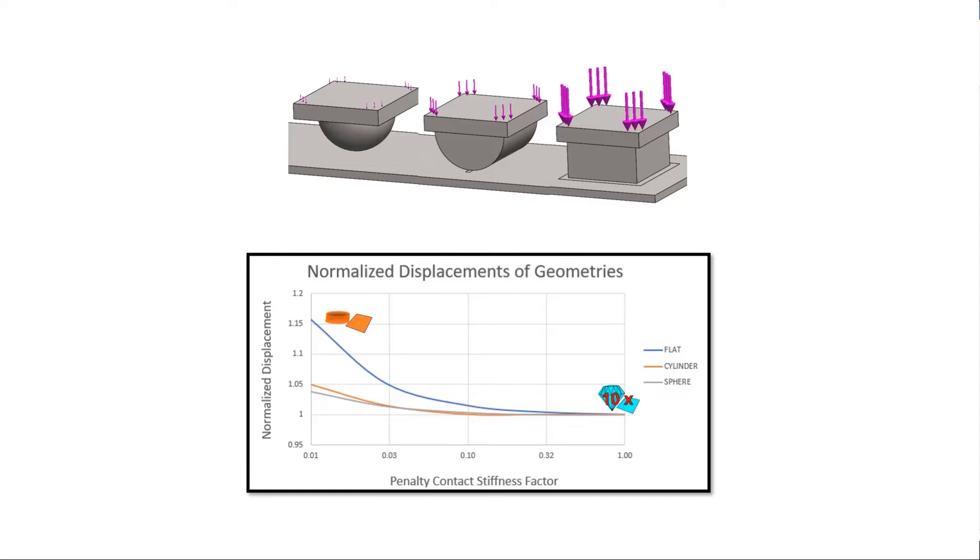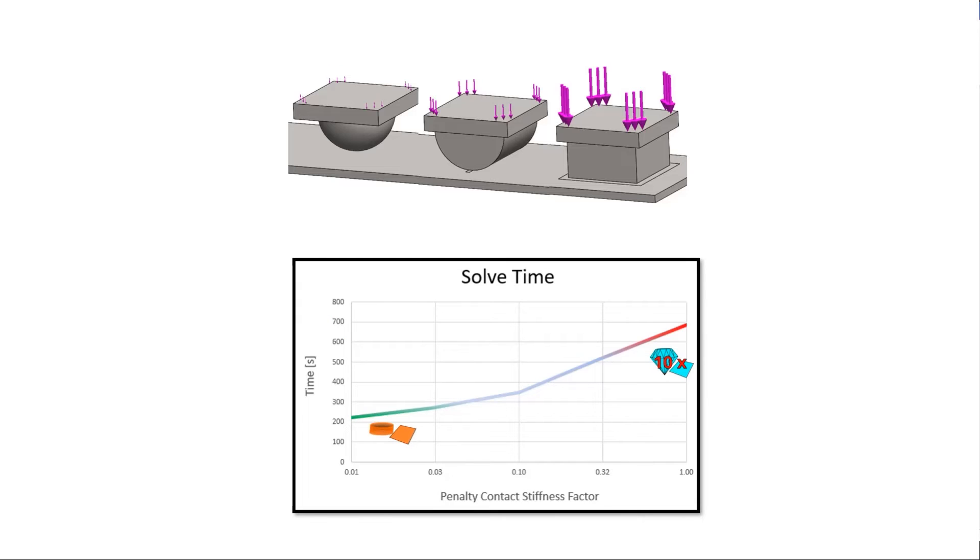Displacement results show a clearer difference between these three models. The flat geometry made of steel will have a stiffness that rivals the lower contact stiffness, so we see more deviation in the results because of this. Finally, if we look at solve times, we saw a large difference. When using the low stiffness, our simulation is about three times faster. This can be a huge savings in your static assembly analysis.